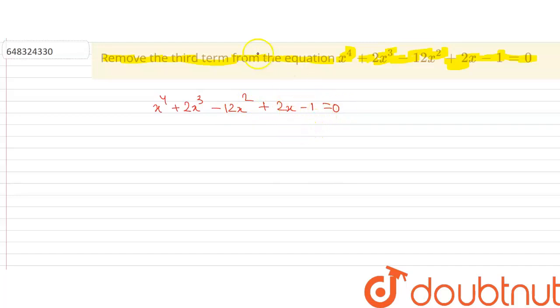It is given that we have to remove the third term. So we have to do the transformation. We have to remove the third term, that is the x squared term. Since we have to remove x squared, we have to differentiate twice.